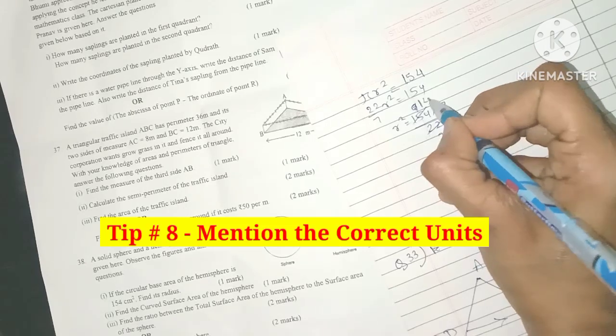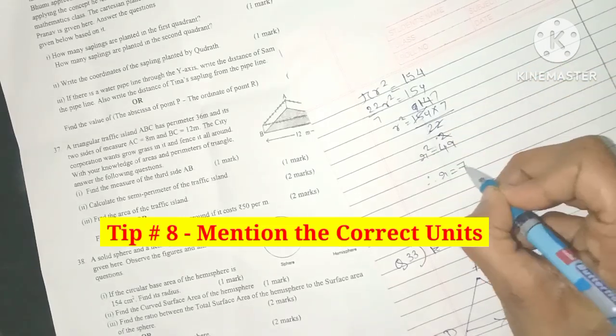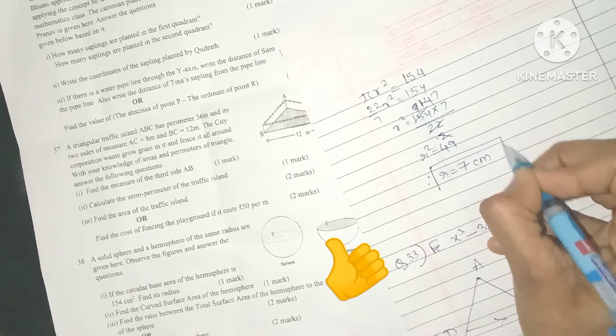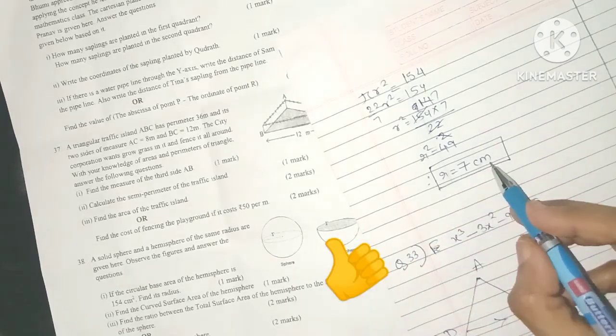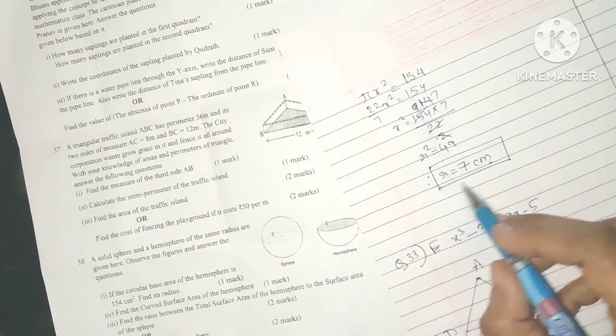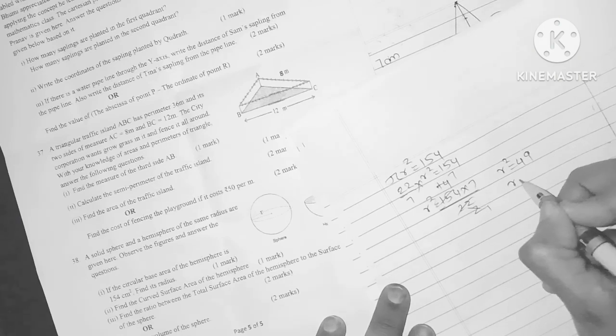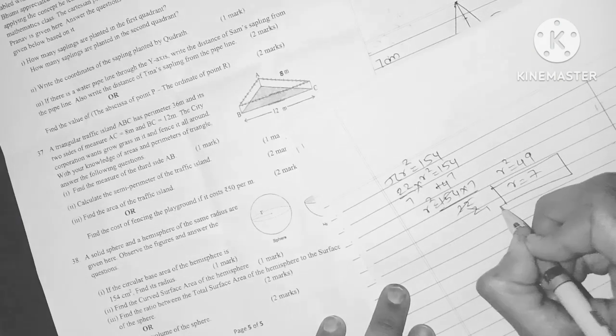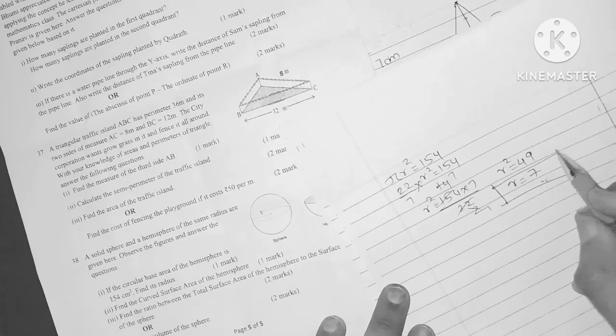The eighth tip is to mention the correct units. Always write the correct units for the answers wherever it is required. For example, distance, area, volume, money, all of them need units. Otherwise marks are cut even if your answer is perfect.